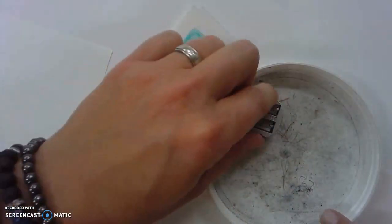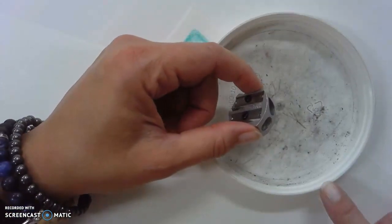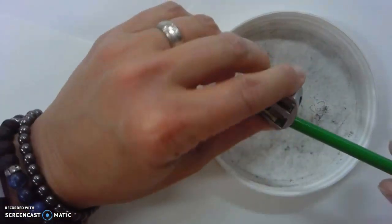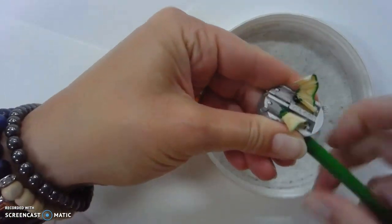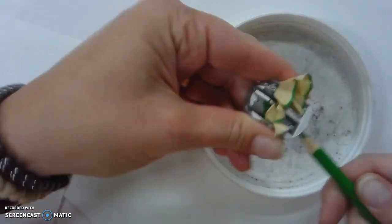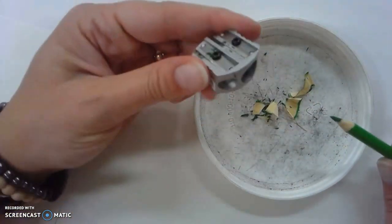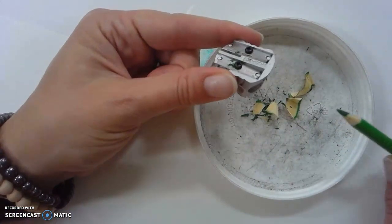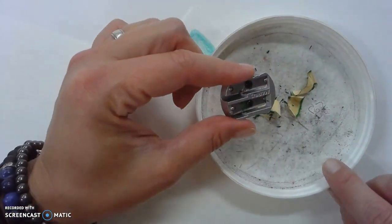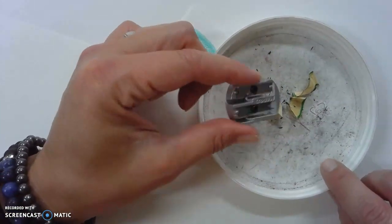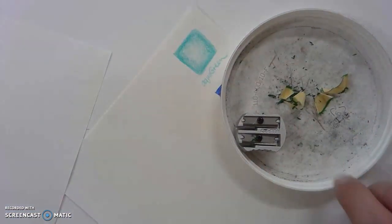The other thing is you might want to find something such as this little lid or container that you can just have right at your work area so that you can sharpen your pencils and keep the shavings in there. Nothing worse than standing above a trash can to sharpen your pencils, only to accidentally drop your sharpener in a dirty trash can. Nobody wants to dig through trash to get the sharpener.